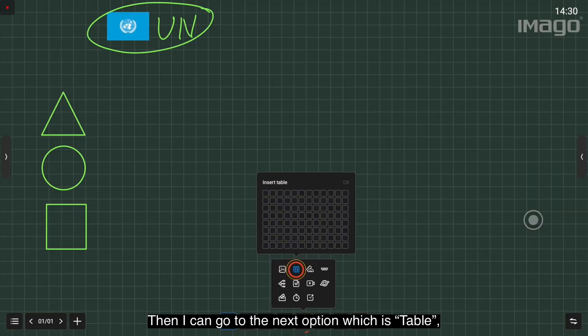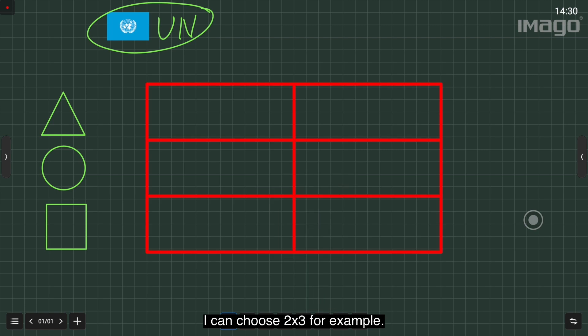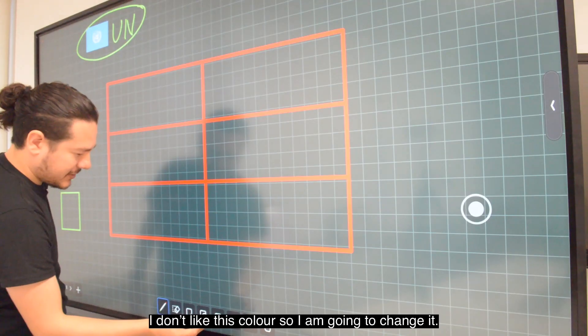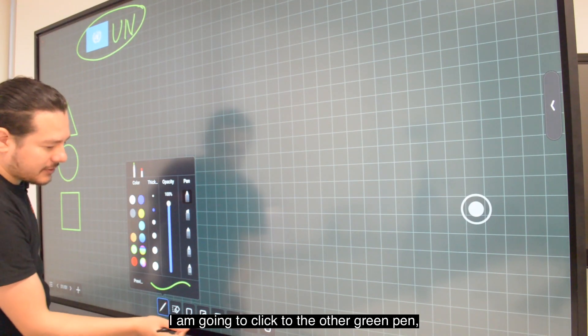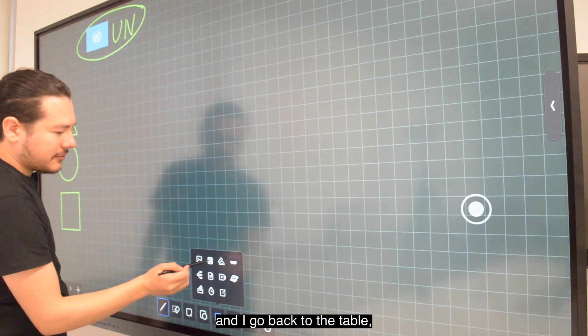Then I can go to the next option which is Table. I can choose 2x3 for example. I don't like these colors, so I'm going to change it. I'm going to click the other green pen and go back to the table.